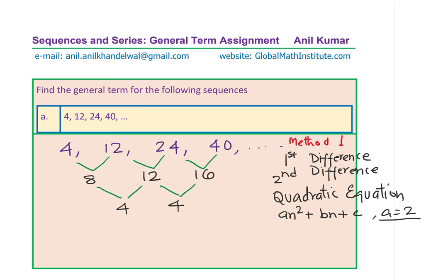Method one can be adopted by some students. However, it takes a lot of time, and some students are not yet comfortable with polynomials. Therefore, solving or writing a quadratic equation for this question could be slightly difficult. Now here is the second strategy, which I'll call method two. In method two, we understand that this is not a linear function — it is a nonlinear function. So when it is a nonlinear function, we can break the components into a product of factors.